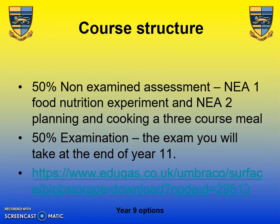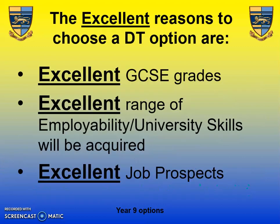The course structure for Food Preparation and Nutrition is 50% for the combined NEAs — NEA 1 and NEA 2 — taking place at the end of year 10 and beginning of year 11, with the examination at the end of year 11 also worth 50%. To round up, there are excellent reasons to choose one of these DT options: excellent grades, excellent employability skills, and excellent job prospects. Thank you very much for listening.